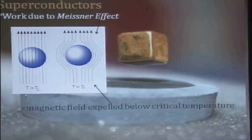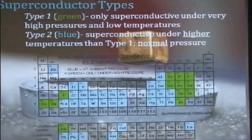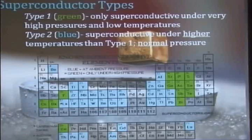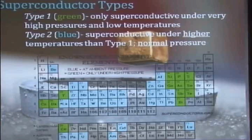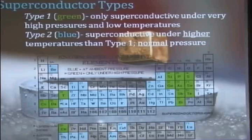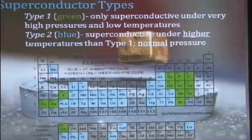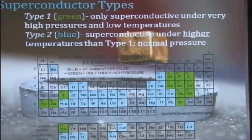We have many elements so far on the periodic table that have been identified as superconductive. But only one type is actually good. The green ones are not ideal because the temperatures have to be too low and the pressures have to be too high. The ones we really want are the blue ones. It can be normal pressure at sea level and temperatures do not have to be quite as low.